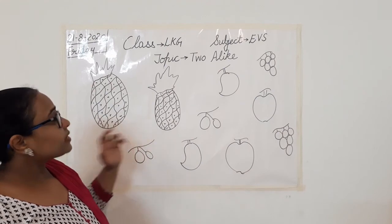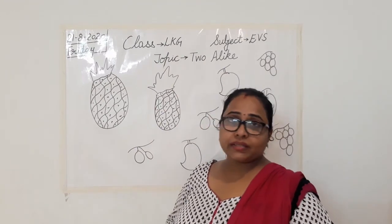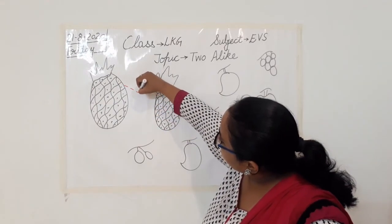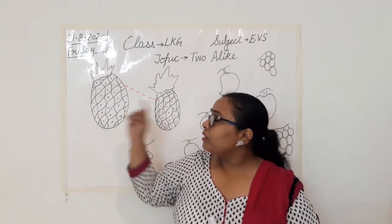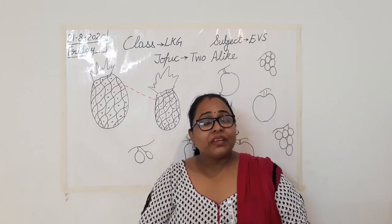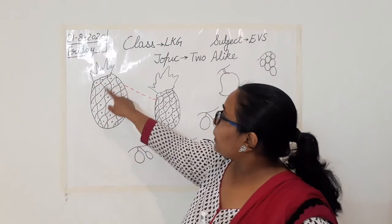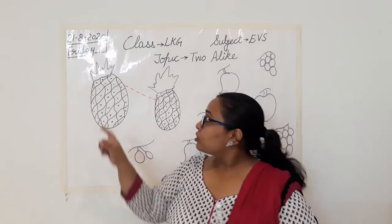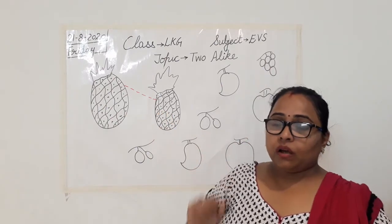So what is the difference? The difference is their size — size is different but they are both the same fruit. We get pineapples of different sizes in the market. So first we'll make a pair of them. Now I'll join them like this with a dotted line. Now can anyone tell me — do we eat this pineapple with peel or without peel? Yes, we remove it. We take out those pines and after that we cut the pineapple in slices.